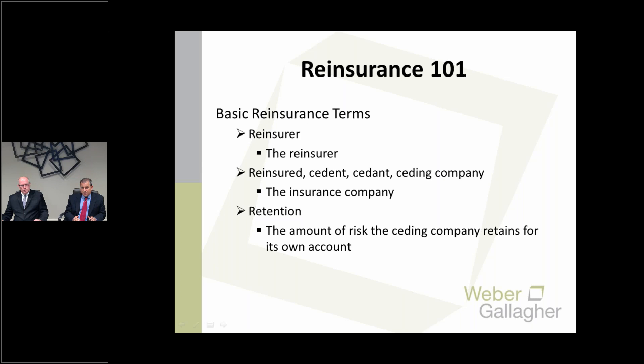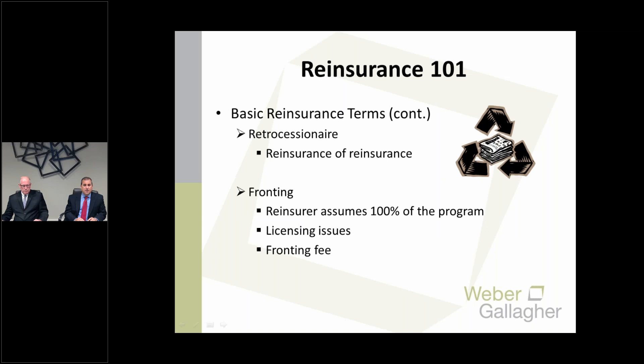Typically in the reinsurance field, the reinsurer does not accept the entire risk. Instead, it accepts a portion of that risk. The amount that is not accepted but is kept by the ceding company is called the retention. There is also reinsurance of reinsurance, where that insurer would be referred to as a retrocessionaire. The principal is just one removed from the ceding/reinsurer relationship — this is now a relationship between a reinsurer and yet another insurer.